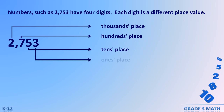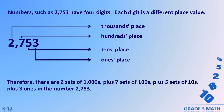The last digit is the ones place, which is three in our example. Therefore, there are two sets of 1000, plus seven sets of 100, plus five sets of 10, plus three ones in the number 2753.